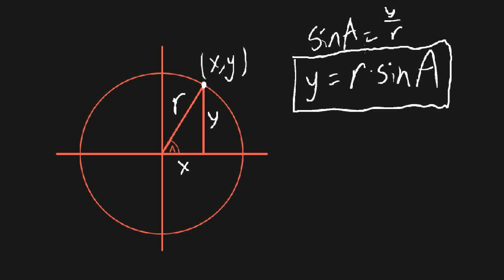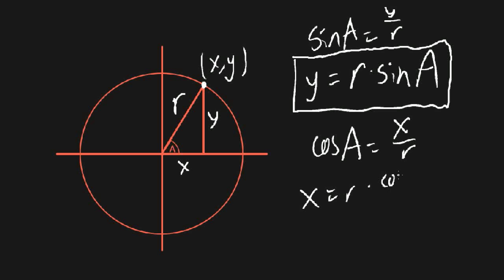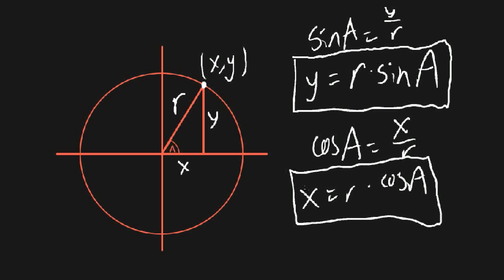Cosine of the angle is x over R, which means x equals R times cosine of angle A. So if you want to know the x and y coordinates of a point on the circle, you only need the radius and the angle the point makes with the x-axis. Then use cosine and sine to find x and y.